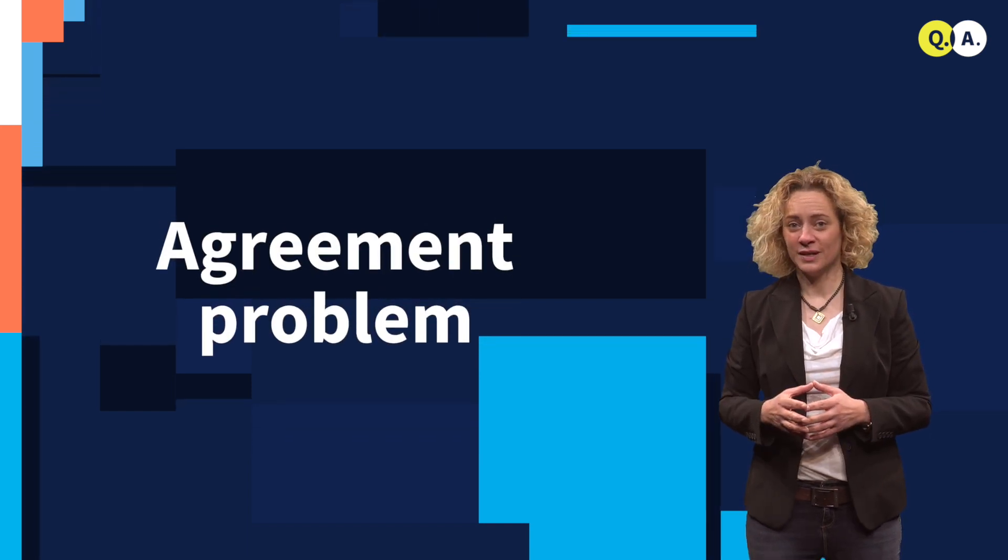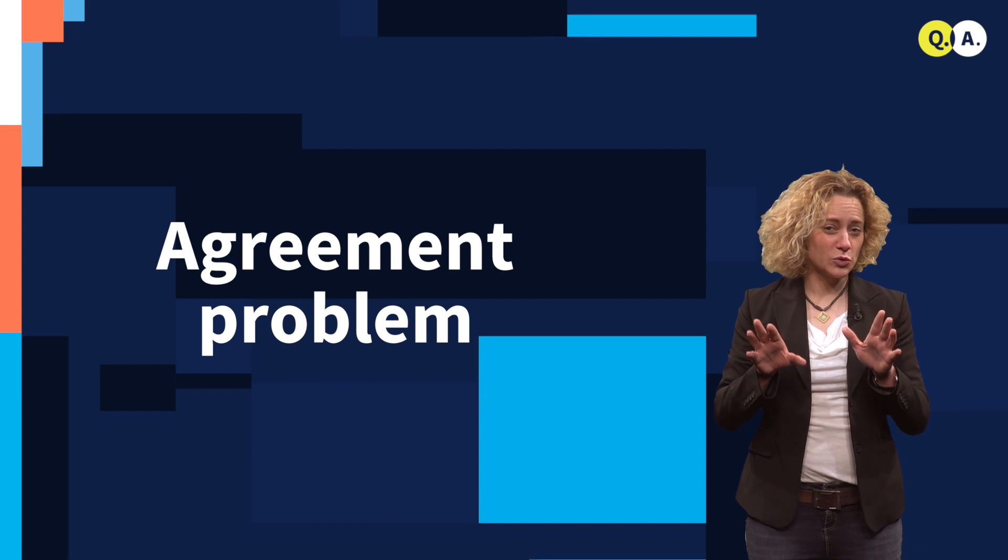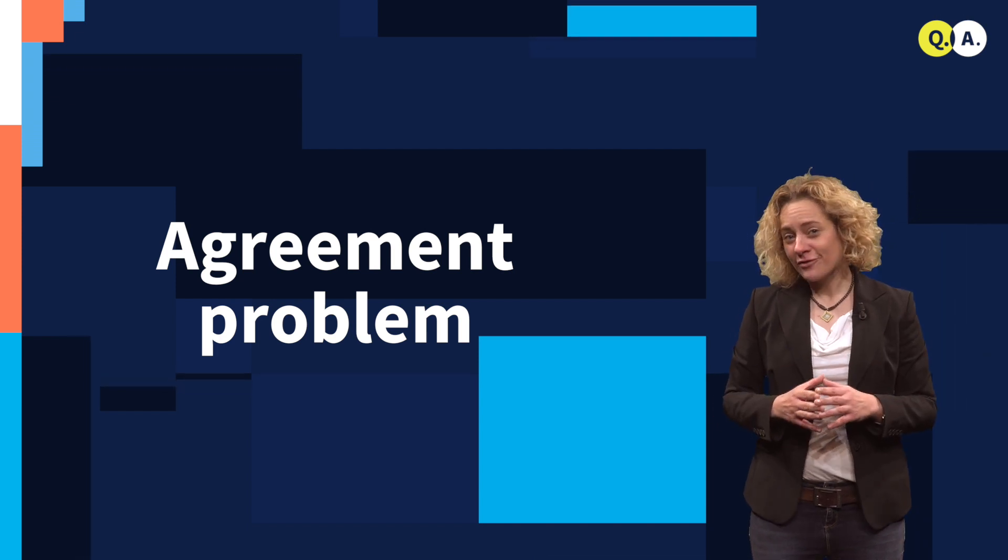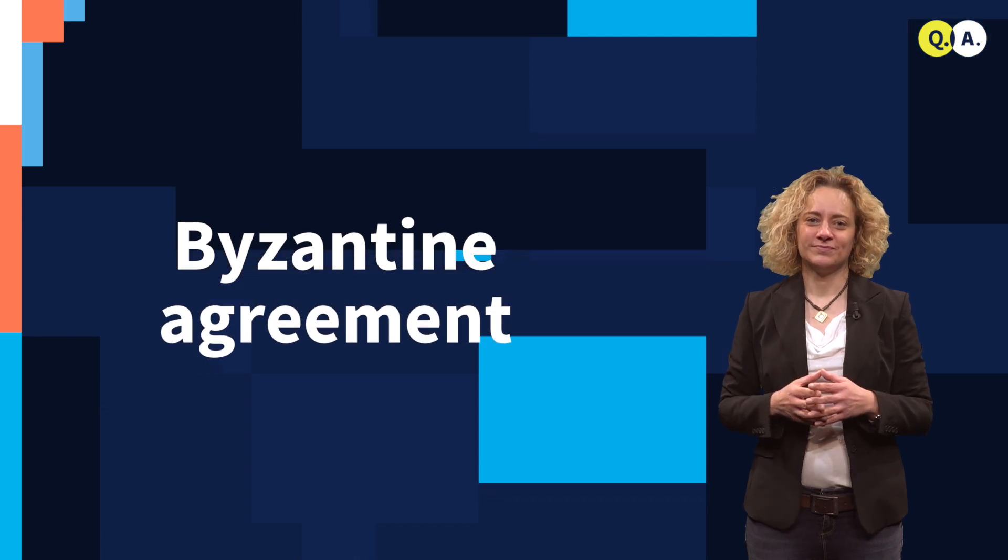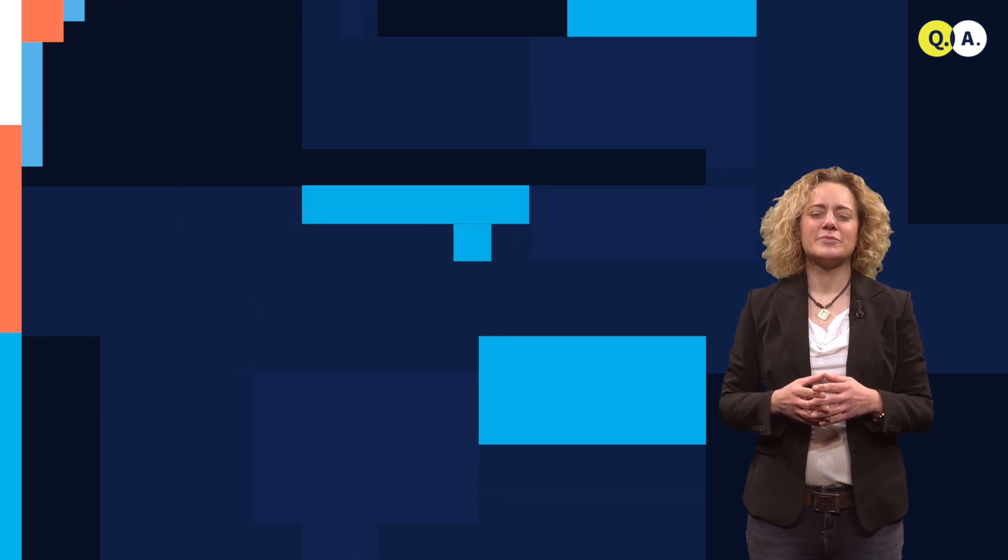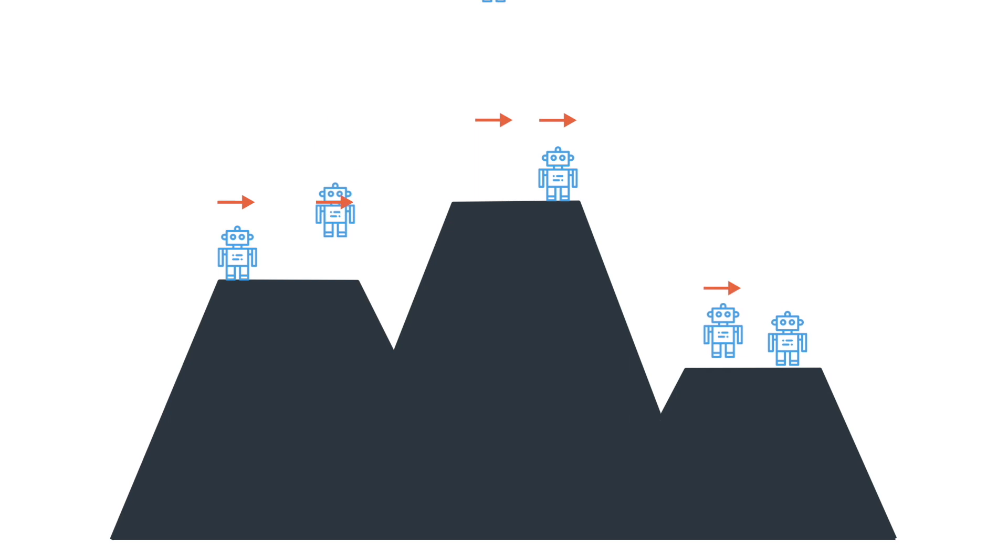One might also want to solve an agreement problem. If you think about the robots on the mountain, a very famous problem is Byzantine agreement. Let's imagine we want to achieve agreement between these robots. For example, we want all the robots that are working correctly to walk in the same direction, either left or right, but not half walking left and the other half walking right.